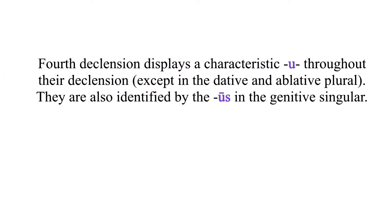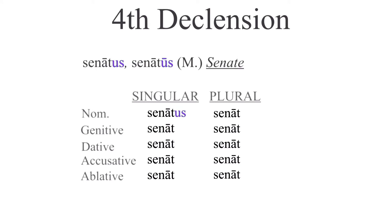Now we come to the fourth declension, a relatively small class of nouns, and mercifully a lot easier to recognize than the third. Generally masculine, they appear with the characteristic U in most of their endings, and can be identified with 'us' in the genitive singular. Today we will learn how these decline, and tackle a little Cicero. Let's choose the noun senatus, meaning senate, starting with the nominative singular: senatus, senatus, senatui, senatum, senatu, senatus, senatum, senatibus, senatus, senatibus.